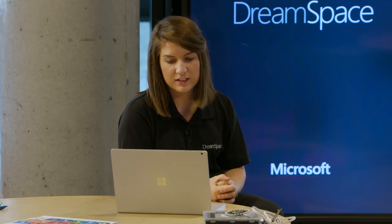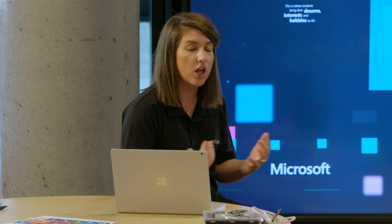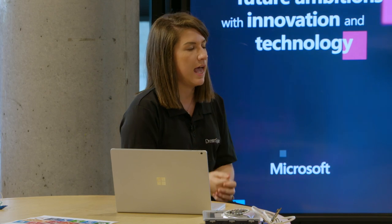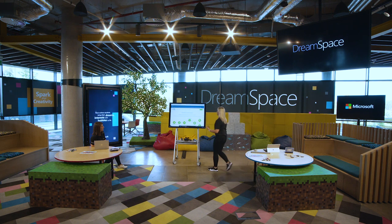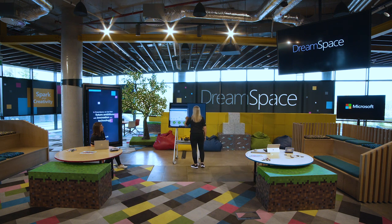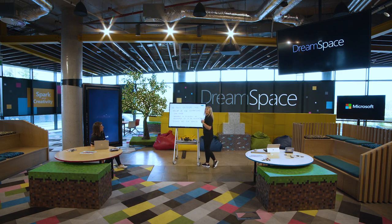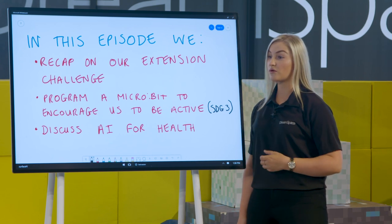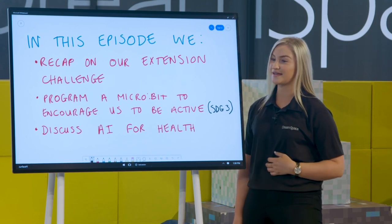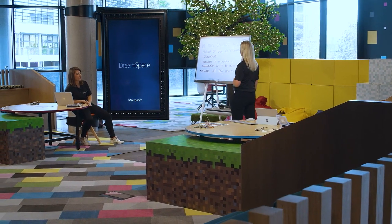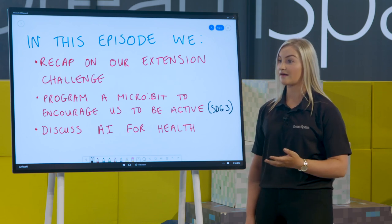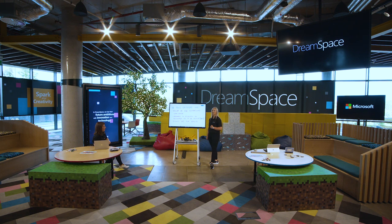That's another cool example of how technology can help and benefit people. Thinking about our global goals — it's all relatable, giving people access they might not otherwise have. So let's recap what we covered in today's episode: the extension challenge from the previous episode; programming our microbit to encourage getting steps up and incorporating a timer; and discussing AI for health with the IRIS example.